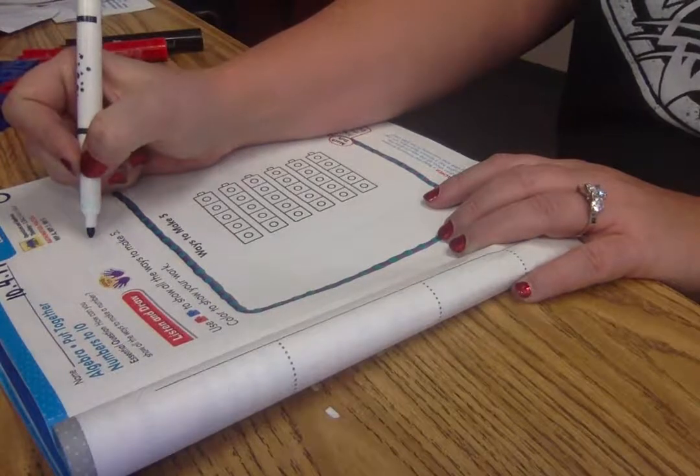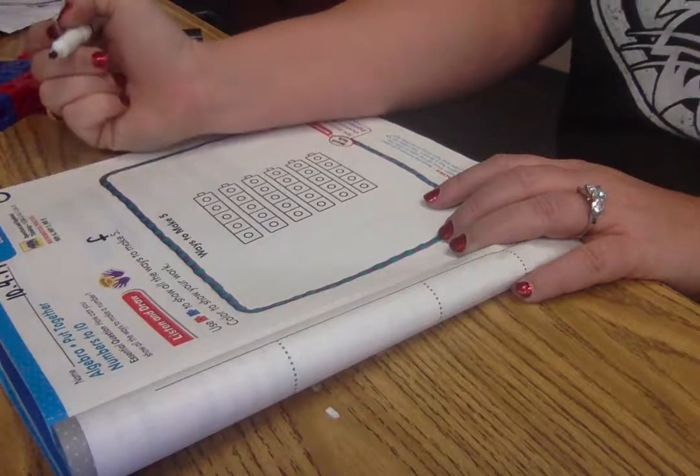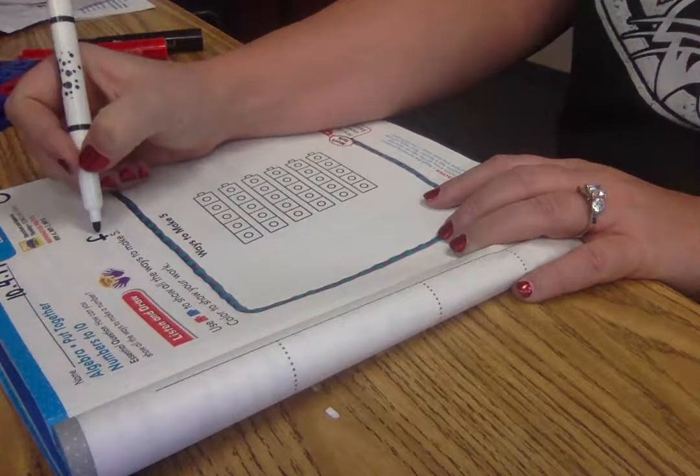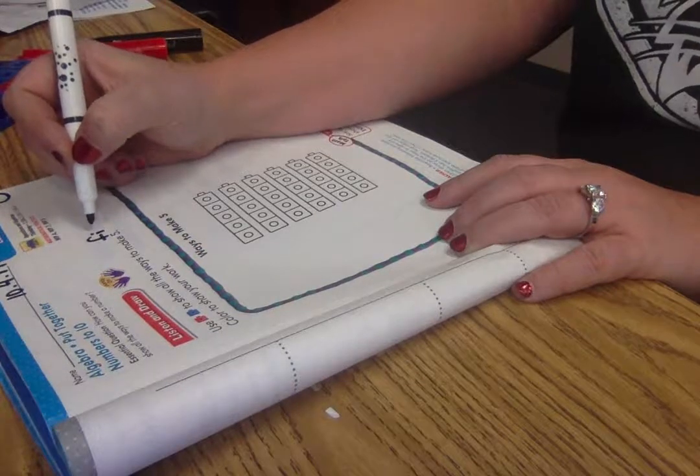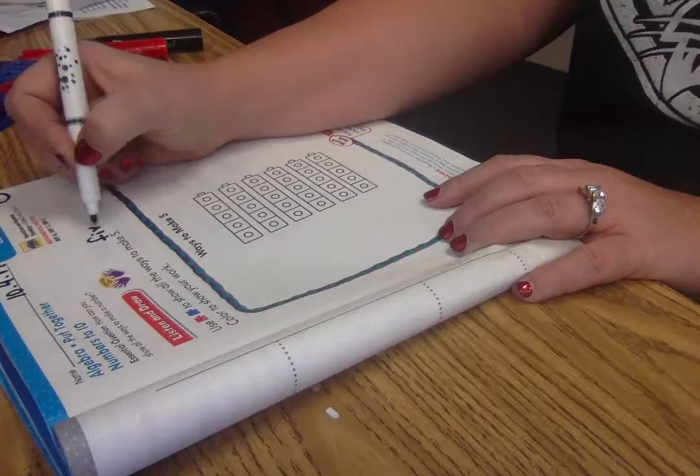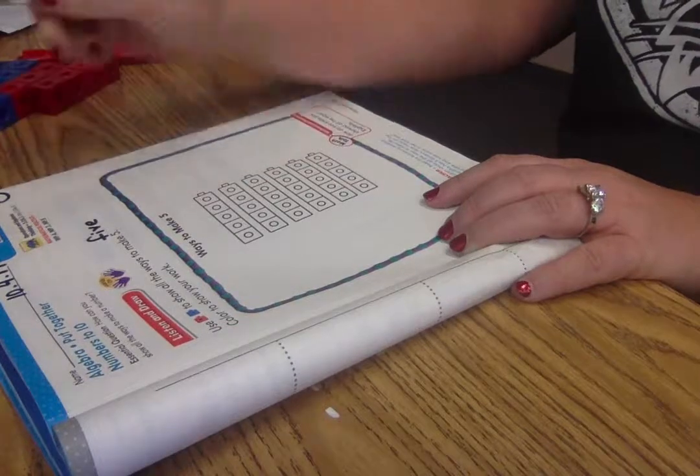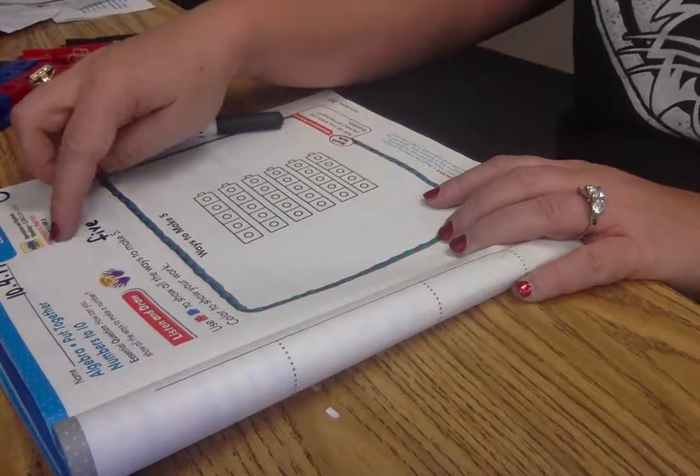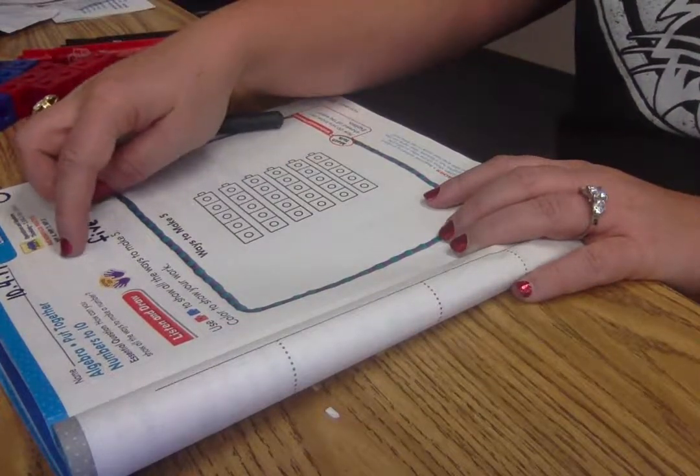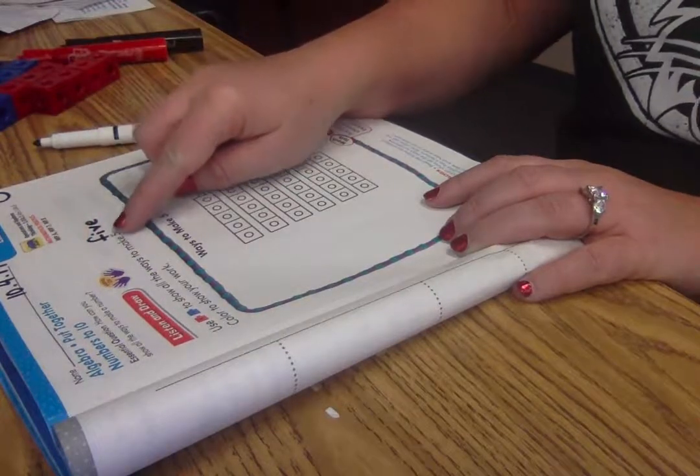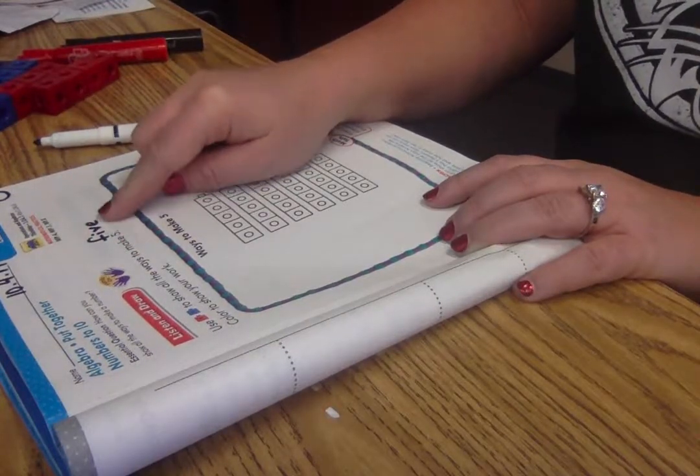I can also write the word five. Please write a lowercase f, i, v, and there's sneaky e. That sneaky e comes over, sprinkles magic fairy dust on the i to say five.